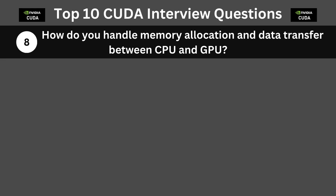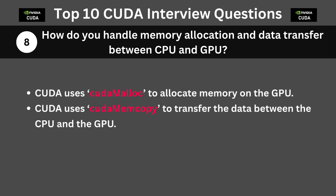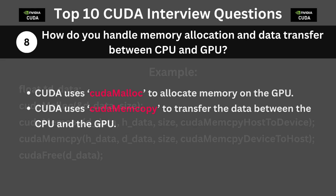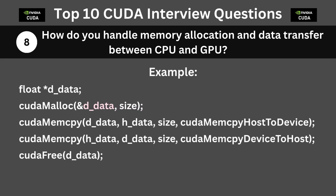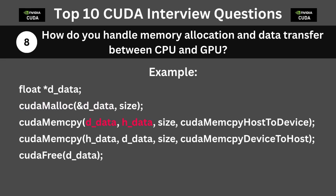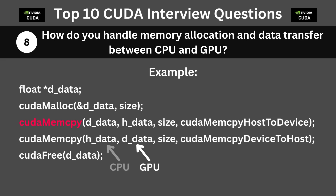The next question is: how do you handle memory allocation and data transfer between CPU and GPU? CUDA uses cudaMalloc to allocate memory on the GPU and cudaMemcpy to transfer data between the CPU and GPU. In the following code snippet, pointer d_data points to the memory location on the GPU allocated using cudaMalloc, and data is transferred between d_data and h_data using cudaMemcpy. Note that d_data is on the GPU and h_data is on the CPU.